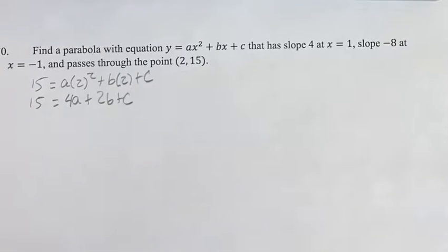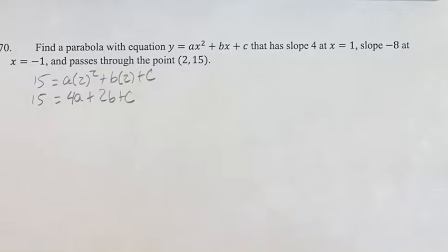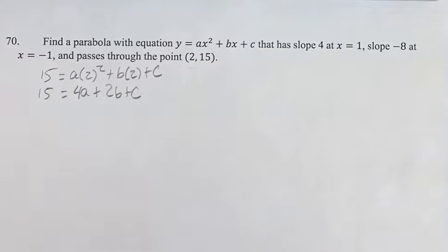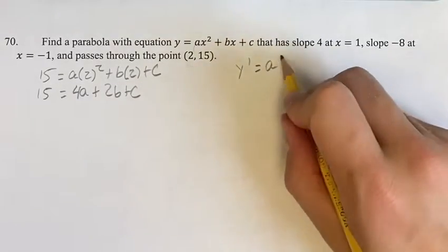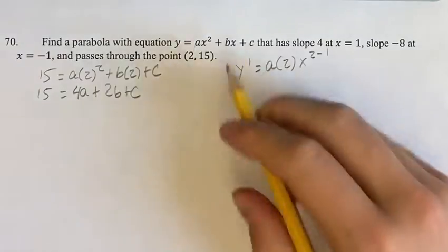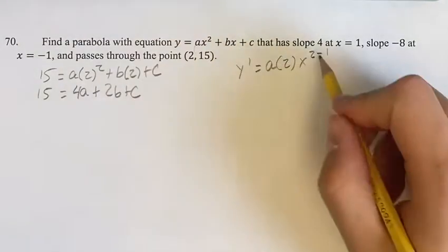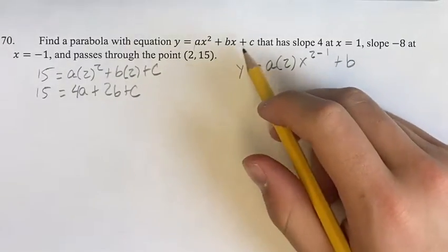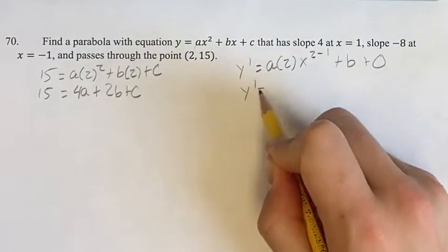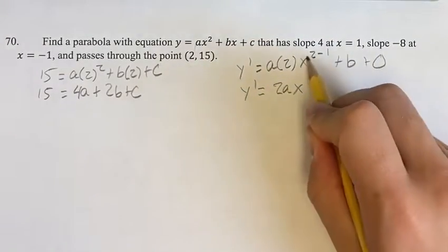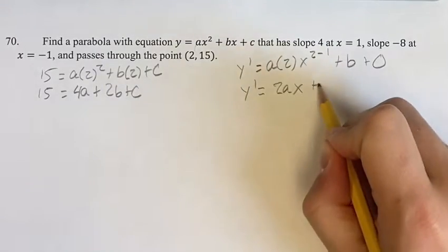We also know that it has slope 4 at x equals 1 and slope negative 8 at x equals negative 1. The slope of the parabola we can think of as the value of the derivative. Getting the derivative: y prime equals — for a power function, you take the coefficient, bring down the exponent, and the new exponent is the old one minus 1. For a first-power term, you just take the coefficient, and the derivative of a constant c is 0. So our simplified derivative is 2ax plus b.